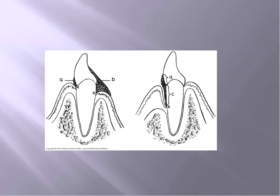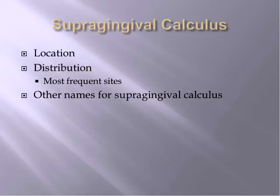Subgingival calculus is underneath the gum tissue — calculus along the root to the bottom of the periodontal pocket, which is marked off as an X. Supragingival calculus is located on the clinical crown, coronal to the margin of the gingiva.